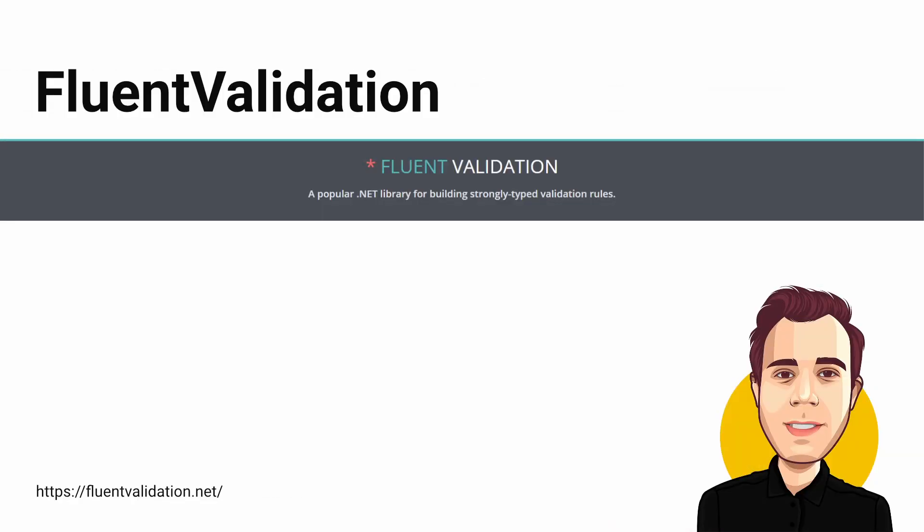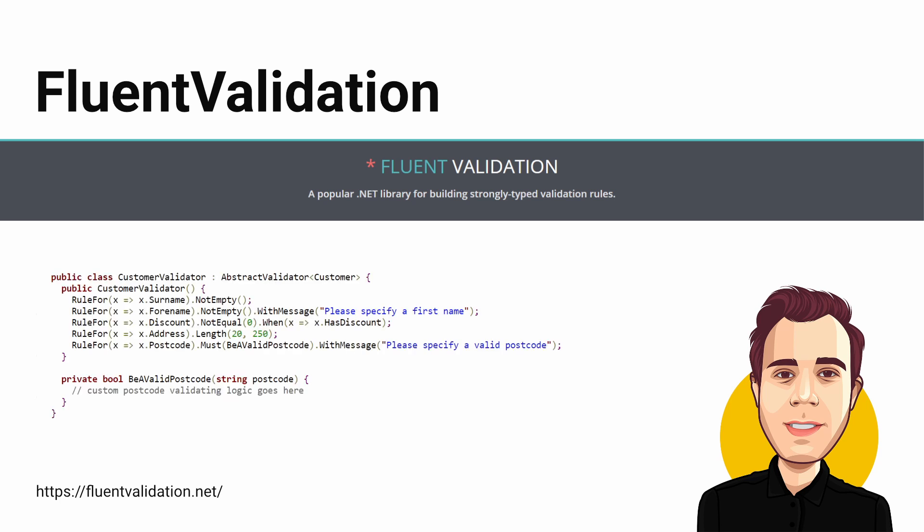FluentValidation is a popular .NET library for building strongly typed validation rules. It has an ASP.NET Core integration, provides an extensive list of built-in validators, and offers a simple API to create custom validators. FluentValidation is especially helpful when you need to support multiple languages — all the built-in validators translate into the current UI culture of the application, and you can provide localized messages for your custom validations. I have used FluentValidation before and I am considering using it for another project I'm working on right now.